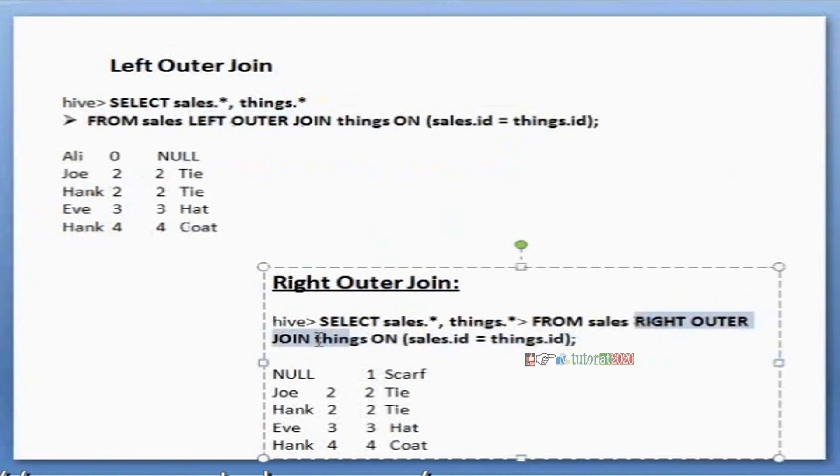Left outer means left side values only coming. Right outer means right side values only coming. If anything is not matching on the left side, nulls are displayed. That is left outer and right outer.